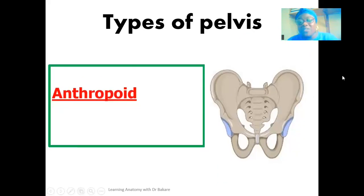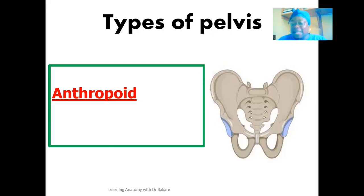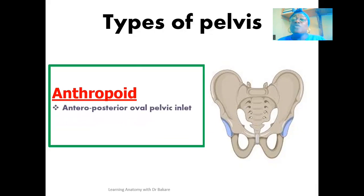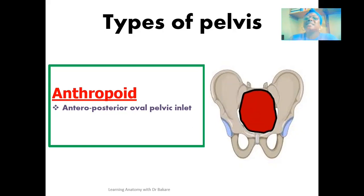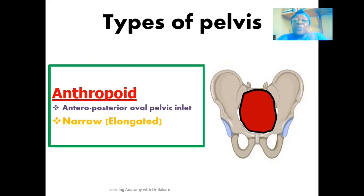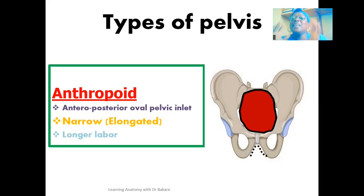The third type is the anthropoid pelvics, a name derived from apes, as most apes carry this type. The pelvic inlet is oval in shape, but this oval configuration is directed anterior-posteriorly, as highlighted here in red. This makes the pelvis elongated and narrow. The anthropoid pelvics also has a less wide pubic arch, which also results in a less wide pelvic outlet. Vaginal birth may occur in women carrying this type, but if it does, labor will last longer than normal.